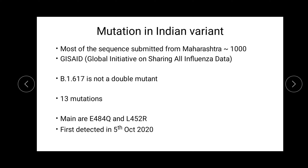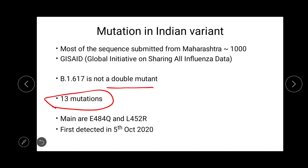This variant is called a double mutant, but it is not strictly a double mutant — there are actually 30 mutations in it. Then why is it called a double mutant? Because there are two main mutations which make this virus more deadly: E484Q and L452R.